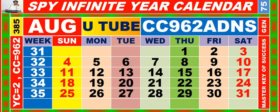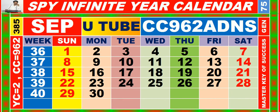Calendar for the month of August, having calendar code equal to 962. Calendar for the month of September, having calendar code equal to 962.